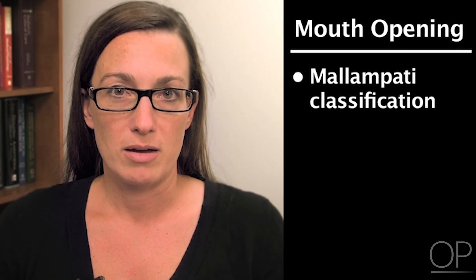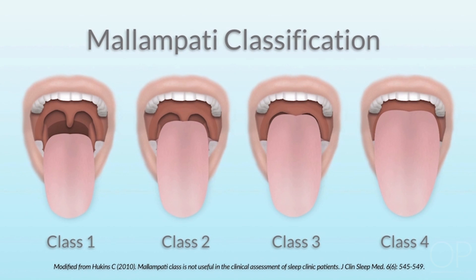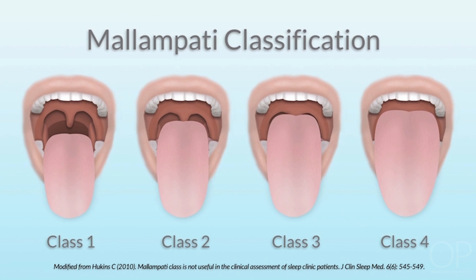As far as mouth opening, we frequently talk about classifying an airway with the Mallampati classification. When a patient fully opens their mouth, if you can see the uvula, the surrounding space, the tongue, and the posterior pharynx behind it, that's a class one. There are four classifications all the way to class four, where you can only see the hard palate when they open their mouth.